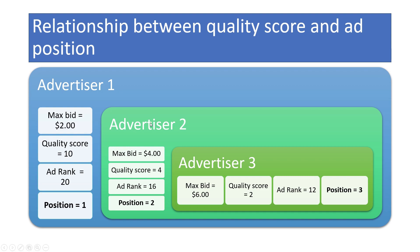Now let's say there's a second advertiser bidding twice the amount — $4 instead of $2. But the quality score of advertiser two is only 4, so the ad rank goes down to 16 and Google places that ad in the number two spot. And finally, advertiser three is bidding $6 — three times advertiser one — but the quality score of this advertiser is only 2. The ad rank is 12, and Google puts this advertiser's position at number three.